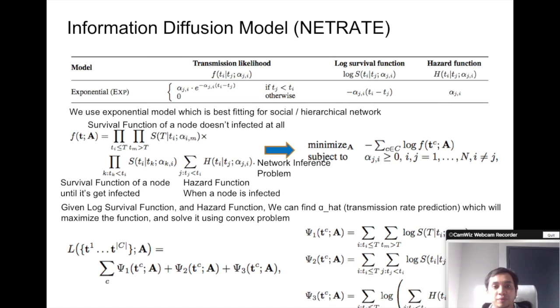For the information diffusion, we propose NetTRAP with exponential model, which is the best fitting model for our social and hierarchical network. Given the survival function in which a node doesn't get infected from a cascade, and hazard function when a node is infected, we can produce a network inference problem to minimize the log likelihood and predict transmission rate between all the nodes using a convex problem.